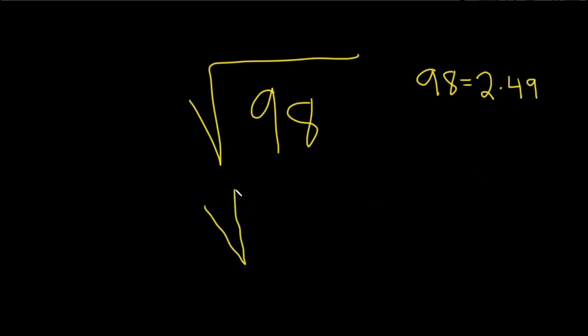Let's come over here, and then now just replace the 98 with 2 times 49. So 2 times 49. And then we can break this up into two square roots. This is really the square root of 2 times the square root of 49.